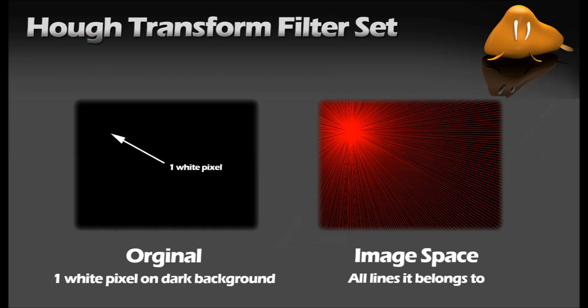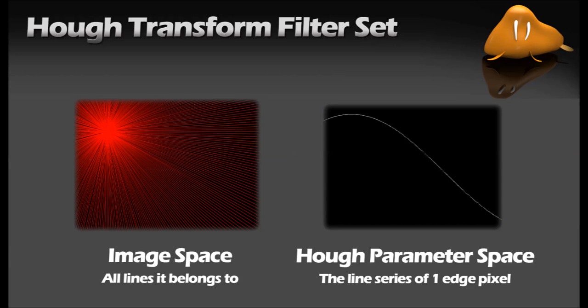The concept of Hough Transformation for line detection is pretty simple. Every edge pixel has a series of lines crossing it in every possible angle. Depending on the angular resolution you set up for the algorithm, you have many lines crossing each of your edge points. So every edge pixel belongs to many lines, but thanks to a smart representation these series of lines can be described by one curve in the Hough parameter space.